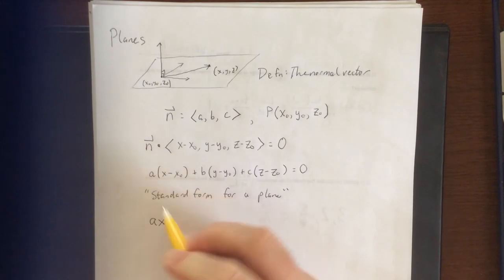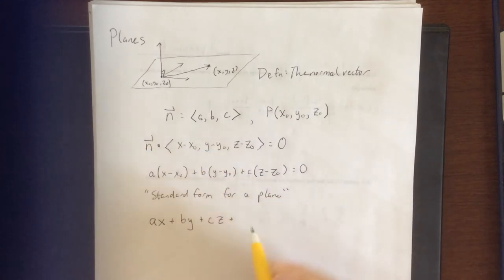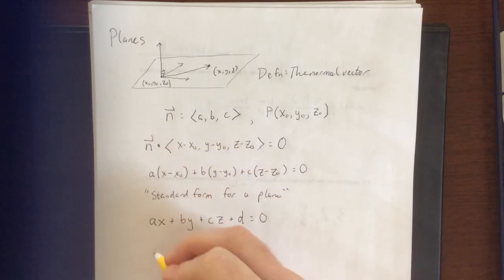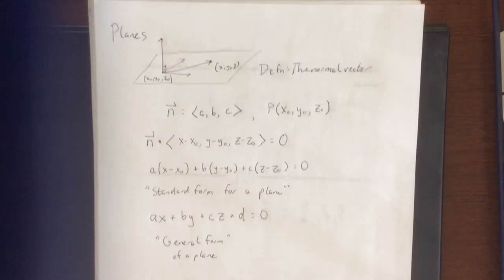In the event that you do that, a is still the coefficient of x, b is still the coefficient of y, c is still the coefficient of z, but then you can take all of these other constants that are in here and combine them all together. This is referred to as the general form of a plane. General form of a plane.